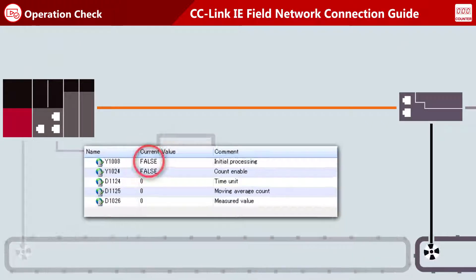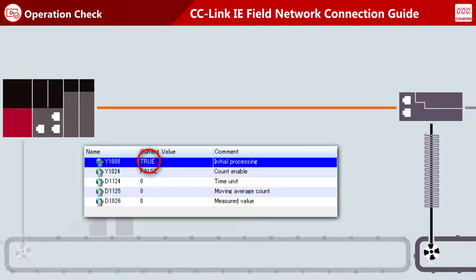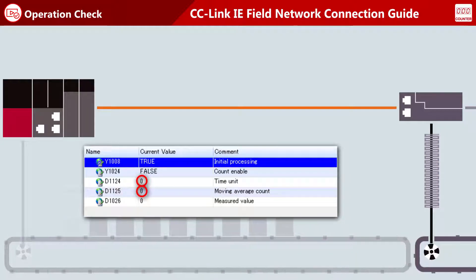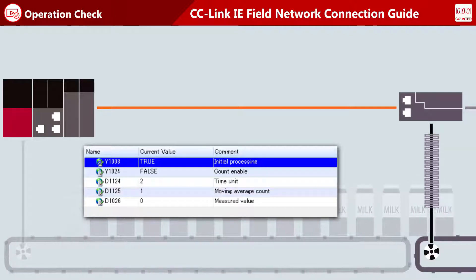Turn on the initial processing device at the master station. Then set values for the time unit and moving average count devices. Turn on the count enable device.